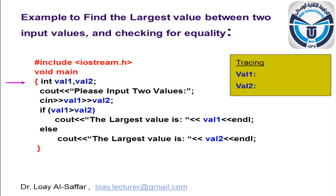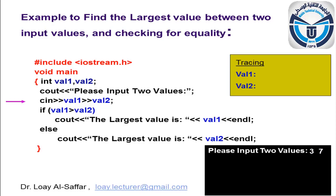Let's repeat the previous example using the if-else statement. Two variables are defined as integers. A statement will be displayed to prompt the user to input two values, then the cin statement is executed. Let's suppose we enter the same values: val one = three and val two = seven. We check: is three greater than seven? The condition is false, so we will not execute the statement following the if. We go to the else, the statement following it is executed, and a message is displayed telling the user that the largest value is seven.